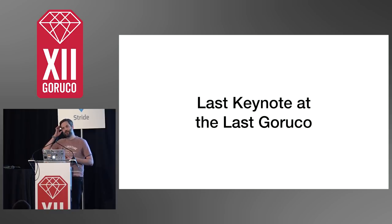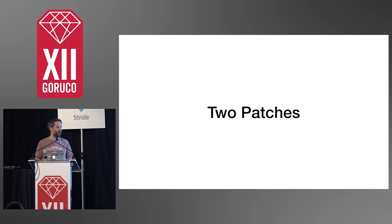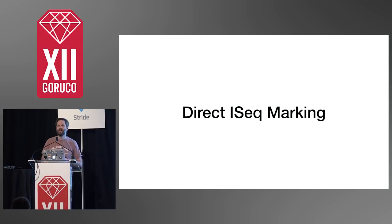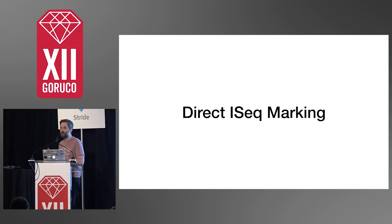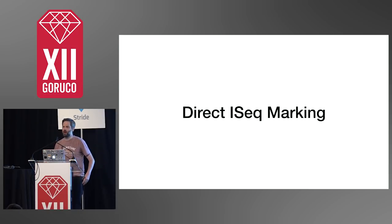We've gone through the jokes part of my presentation, so let's get to the actual technical part. I'm going to talk about reducing memory usage in Ruby. I'm going to talk about two patches that I wrote for Ruby: the loaded features cache, and a thing I call direct iSeq marking. We're not going to look at the code so much as the techniques I used to find these optimizations, because I think it's more interesting for us to learn how to find those things.